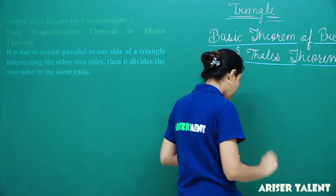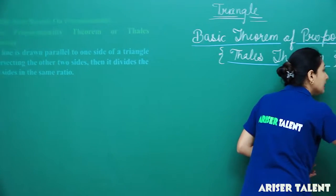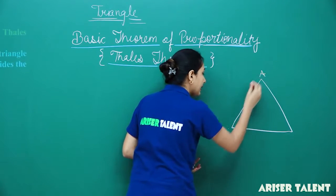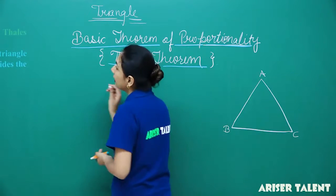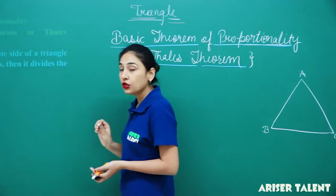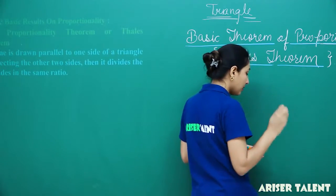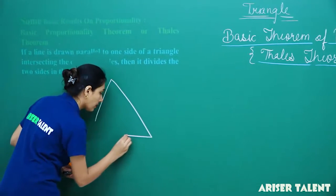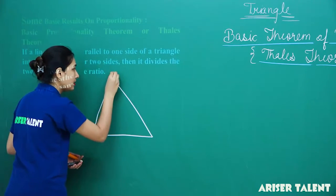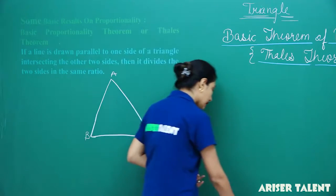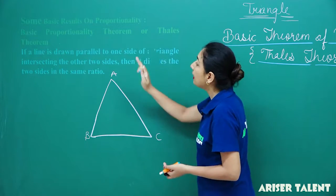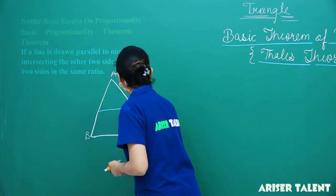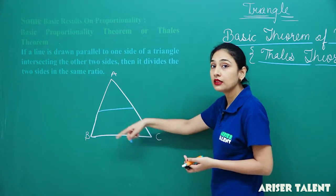What it is trying to say is that if I am having triangle ABC, it is saying that a line is drawn parallel. So we will draw a line parallel. This is A, B and C, and let us suppose any line which is parallel to one side — let us pick BC.